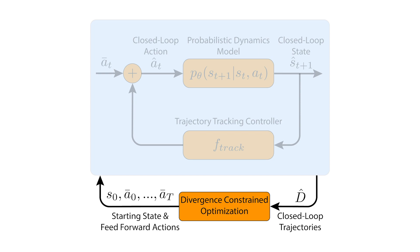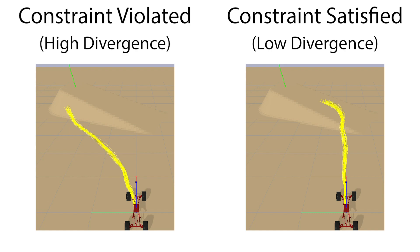During decision-making, our method uses constrained optimization to find a trajectory to the goal. Solutions are constrained to have low divergence between closed-loop trajectories and a nominal reference trajectory. This divergence constraint ensures that the robot is capable of tracking the optimized trajectory.